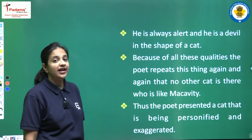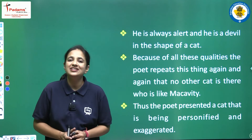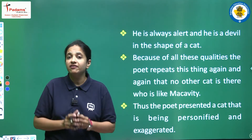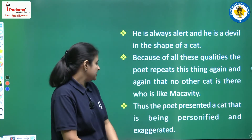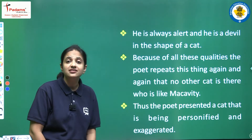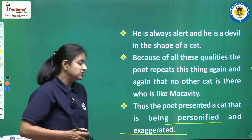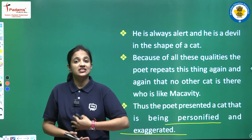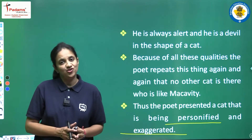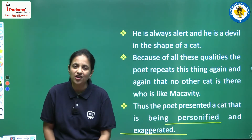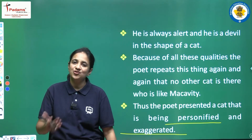The poet repeats again and again that no other cat is like Macavity — he is very rare and unique, and no other cat can match him. Finally, we can say that in this poem, Macavity is personified and the descriptions are exaggerated. The poet gives Macavity qualities that are full of exaggeration, and the cat is also personified. This is the summary of the poem.